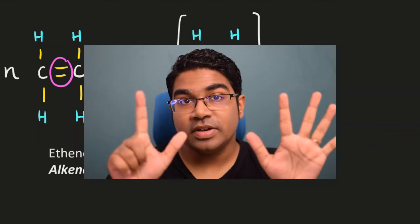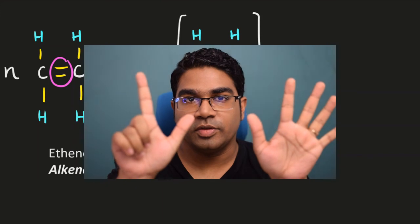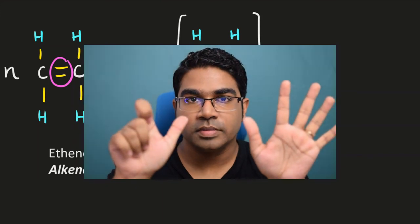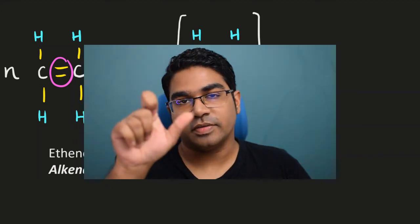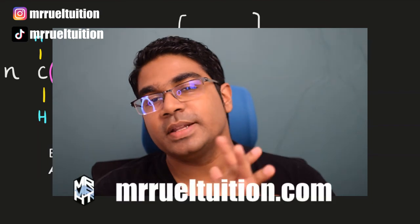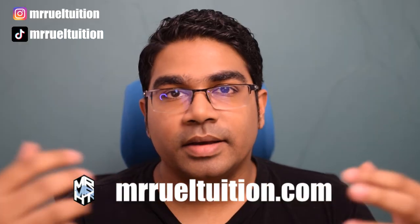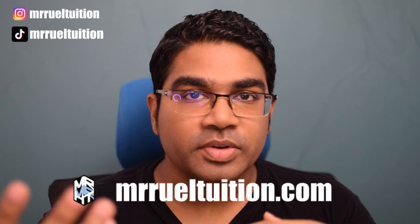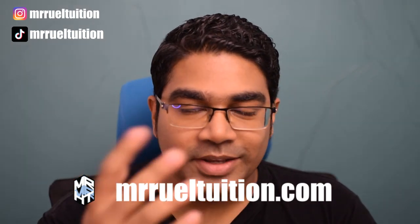So these are the chemical reactions of alkenes: we have combustion, the five addition reactions — hydrogenation, halogenation, hydrogen halide addition, hydration, and oxidation with KMnO4 — and finally addition polymerization. If you've learned something from this video, please hit the like button as it really helps grow the channel. If you enjoy videos like this, please subscribe — I'll be producing at least one video a week. I'll see you in the next video.